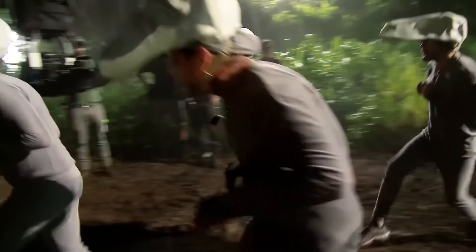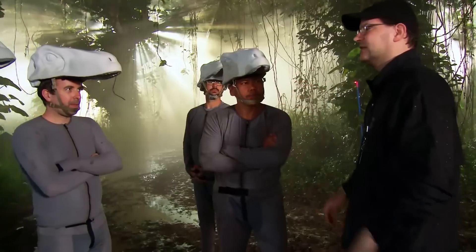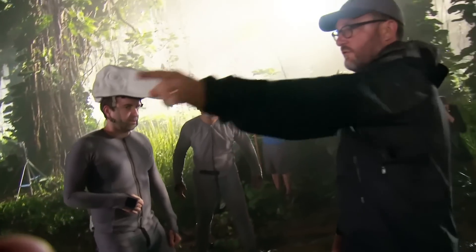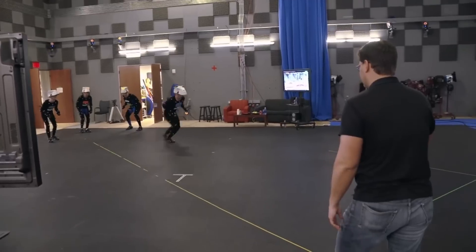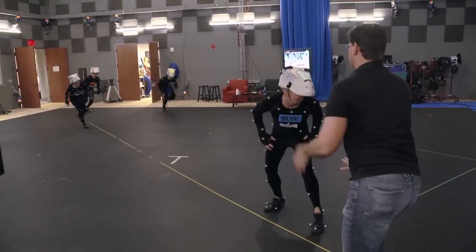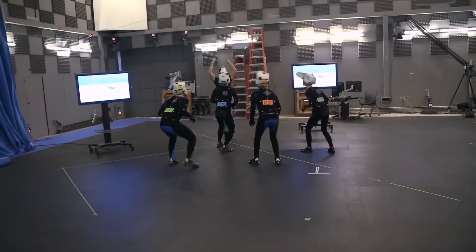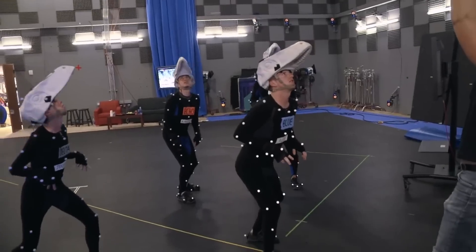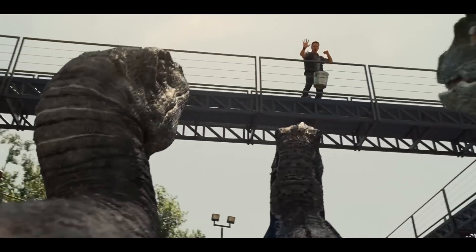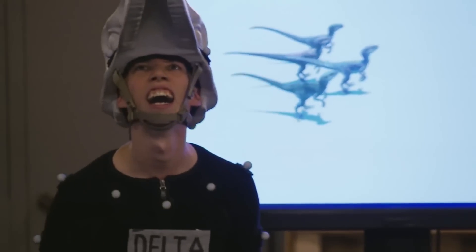For the raptors that Chris Pratt interacts with most, actors wore helmets that gave the eyeline of the dinosaurs. Their movements were used for motion tracking and then replaced through CGI. I think that was very smart because there are some movements actors come up with when they get into the mindset of an animal that are really beautiful — something an animator without a reference might not be able to simulate — especially since in Jurassic World the raptors are such a huge part of the story.